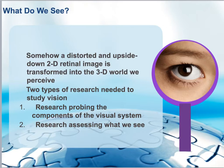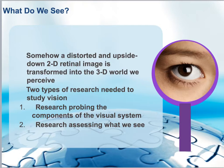To understand and study vision, we need to look at two main points. First, we need to understand the components of the visual system — essentially the anatomy, the cells involved in stimulating the eye, and the cortical area that processes vision. Second, which is trickier, is researching and assessing what you and I actually see.